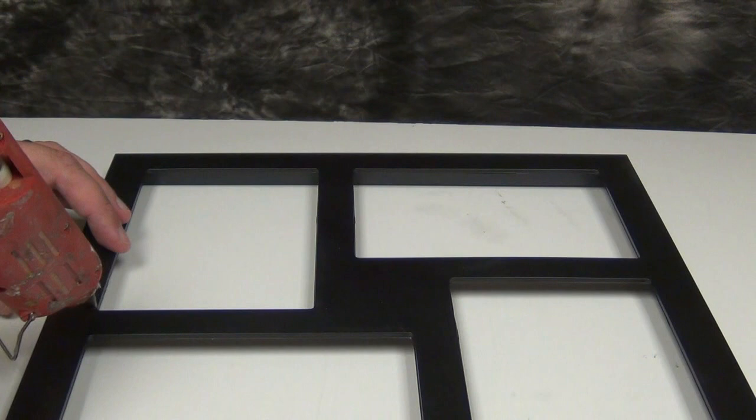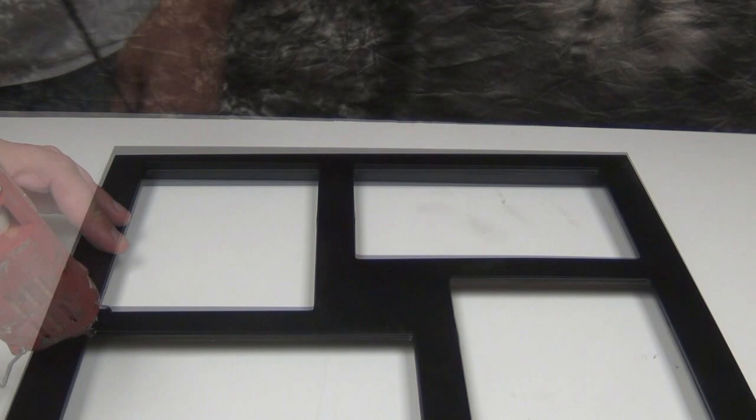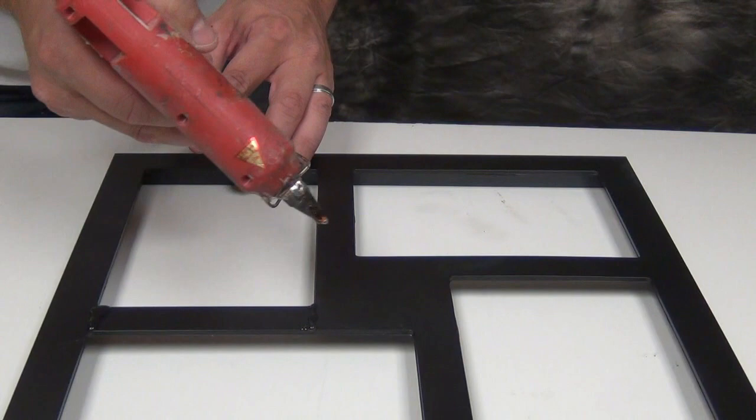Now one of the first little tricks we're going to do to make this look like welded steel is create the welds. I almost hate to give this away, but I use a hot glue gun to create welds and you'd be surprised how convincing this is.